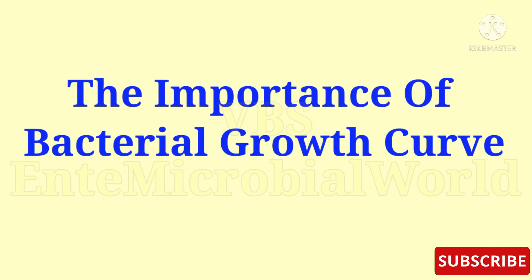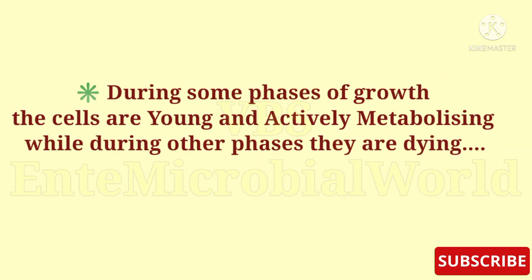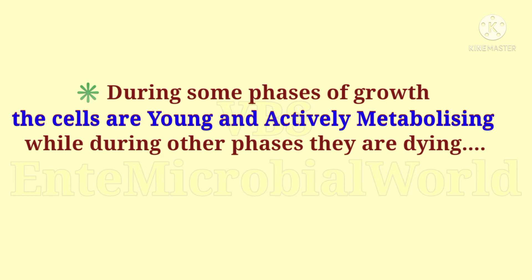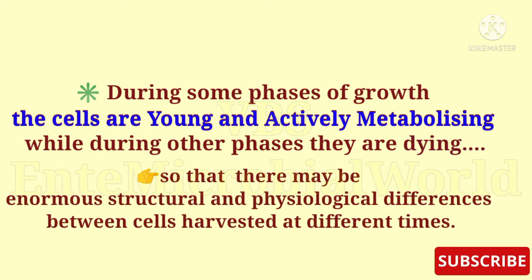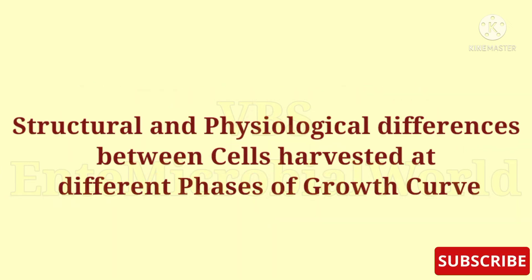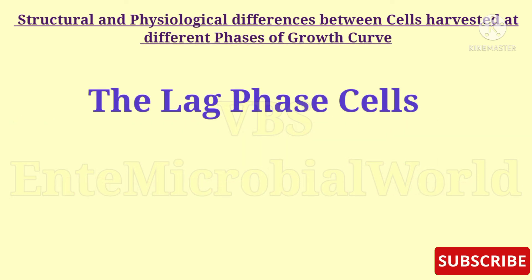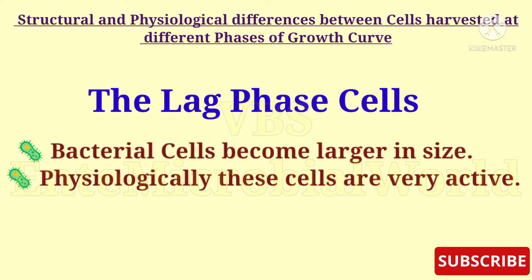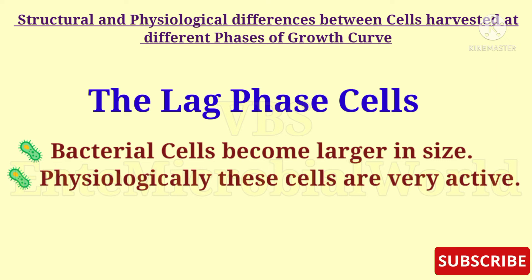Next we are going to see the importance of the bacterial growth curve. From this growth curve study, it must be understood that during some phases of growth the cells are young and actively metabolizing, while during other phases they are dying. So there may be enormous structural and physiological differences between cells harvested at different times. Towards the end of the log phase, bacterial cells become larger in size and physiologically these cells are very active, as these cells are preparing themselves for binary fission or cell division.